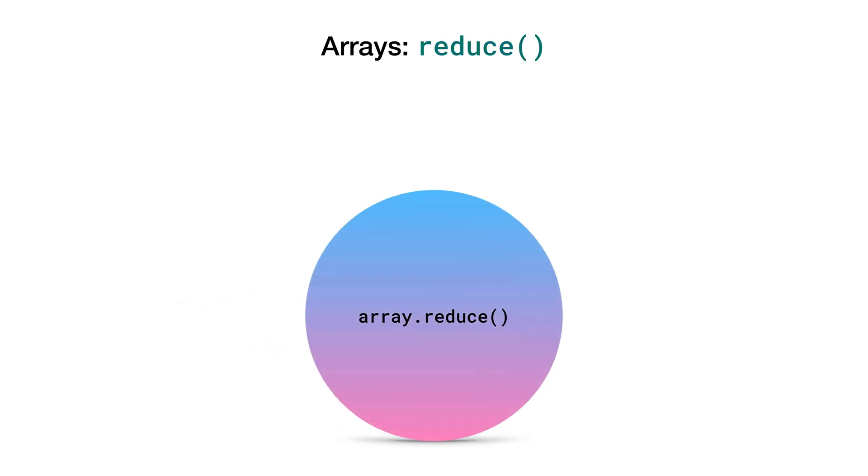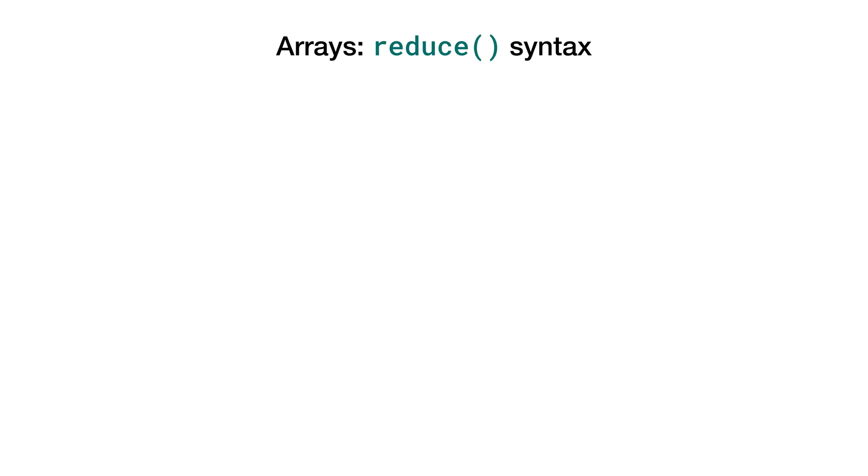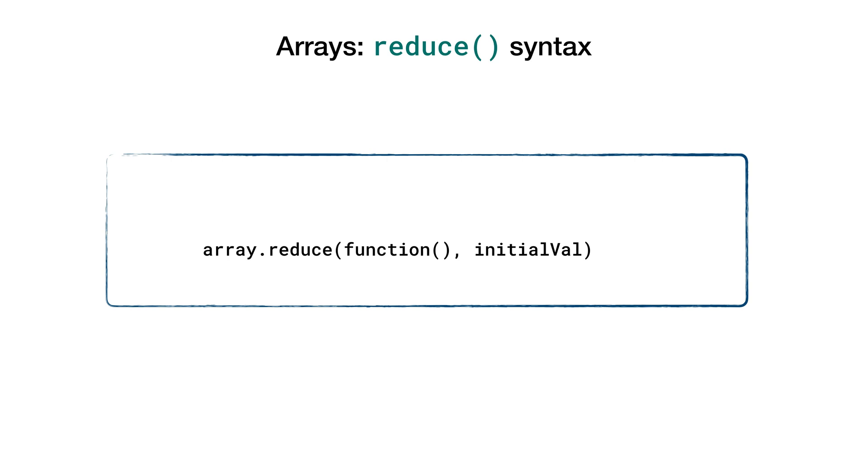The purpose of reduce method is to combine the elements in a sequence together and at the end gives us a reduced single value output. From the syntax standpoint, reduce can be called on an array like this. Reduce is a higher order function. Now higher order functions are those that take other functions as input or return other functions as output or do both.